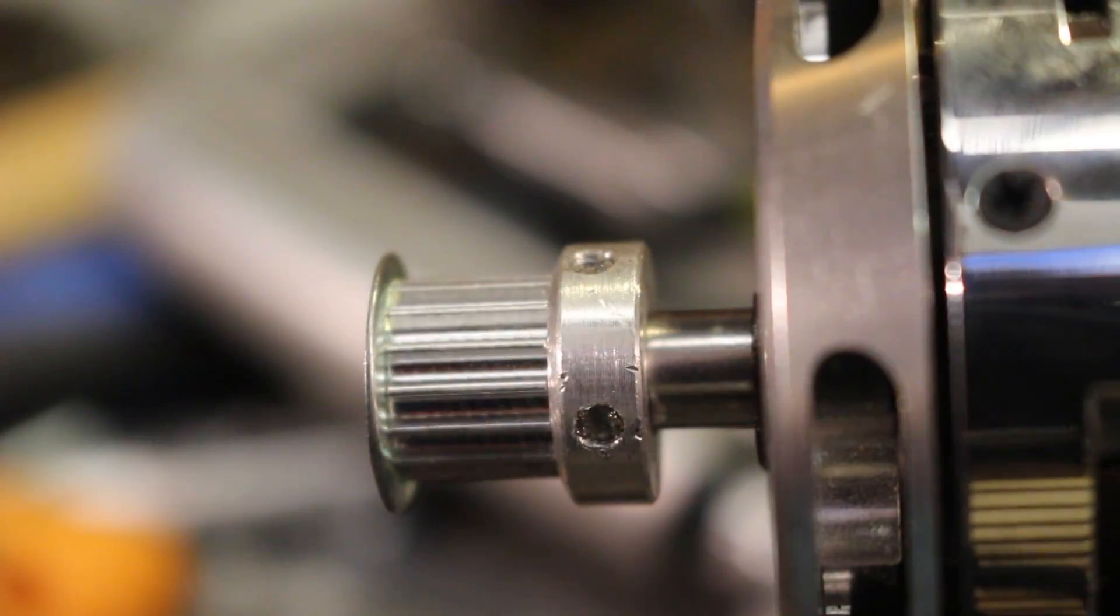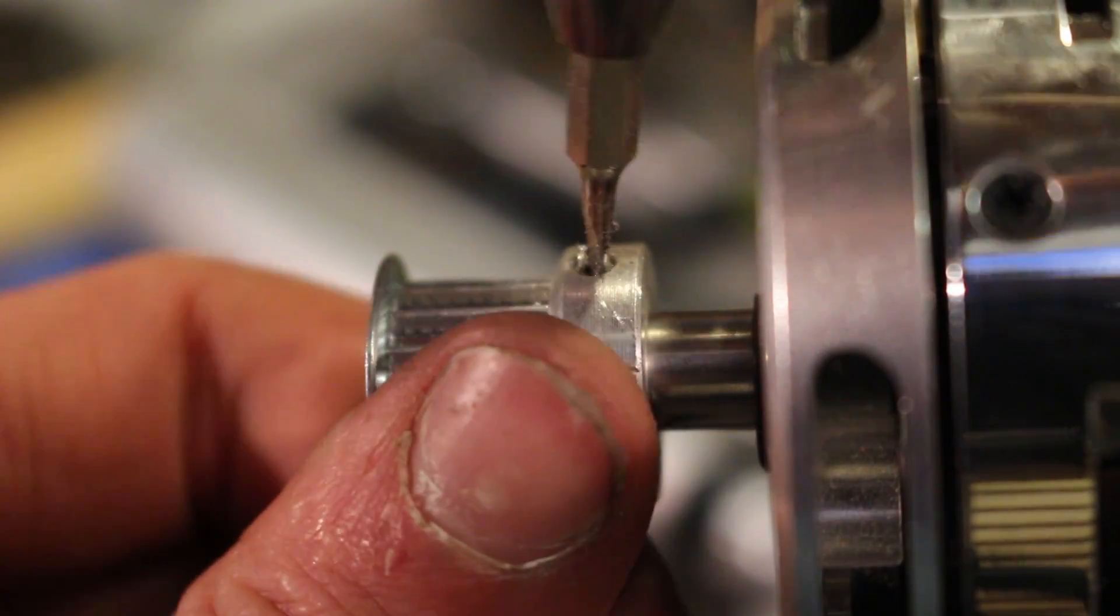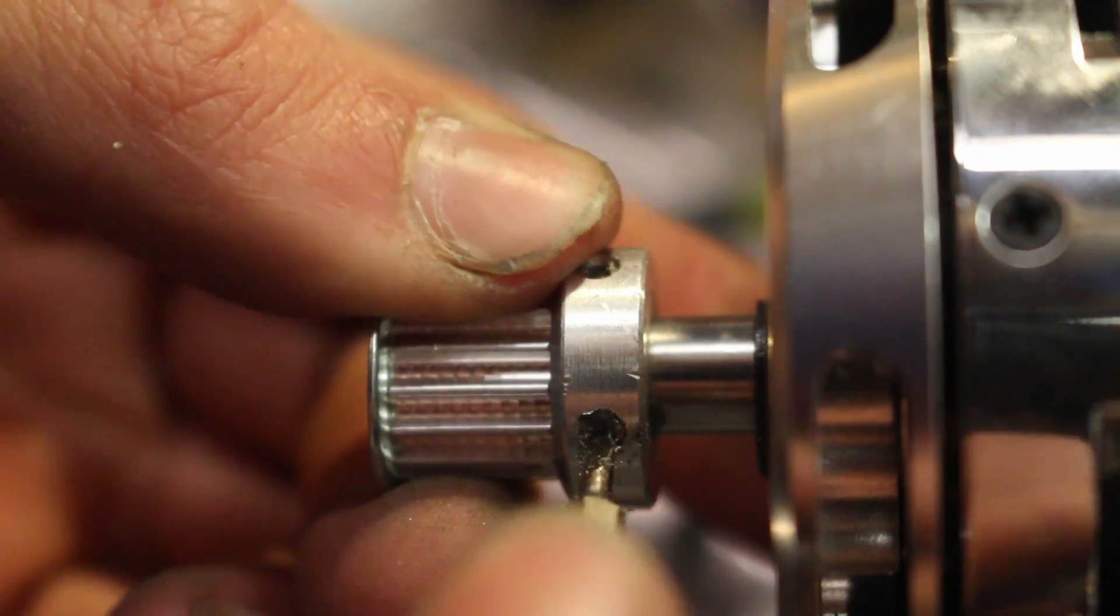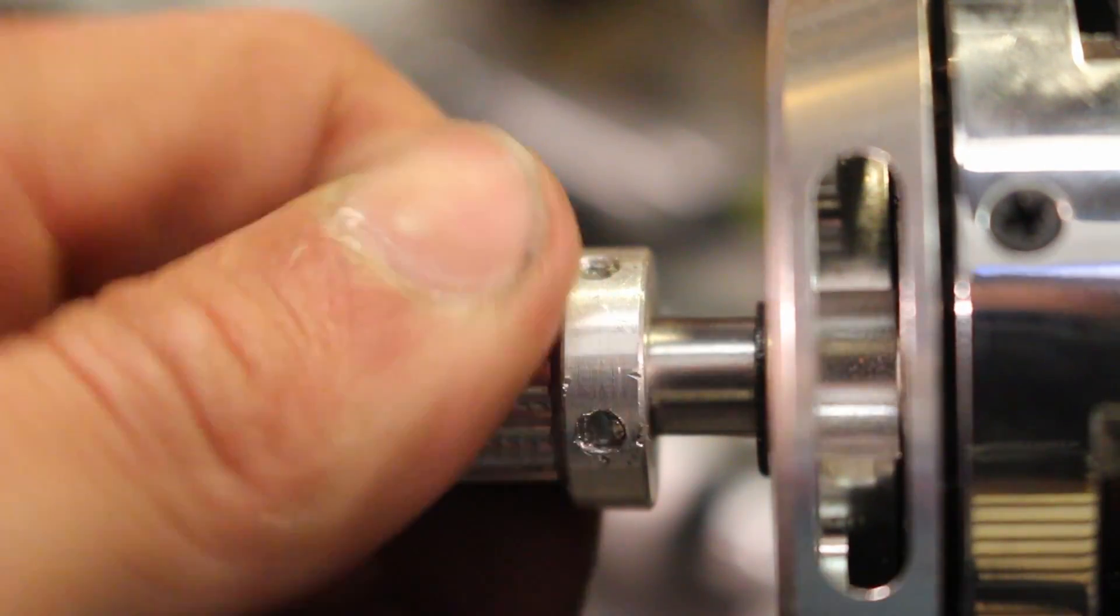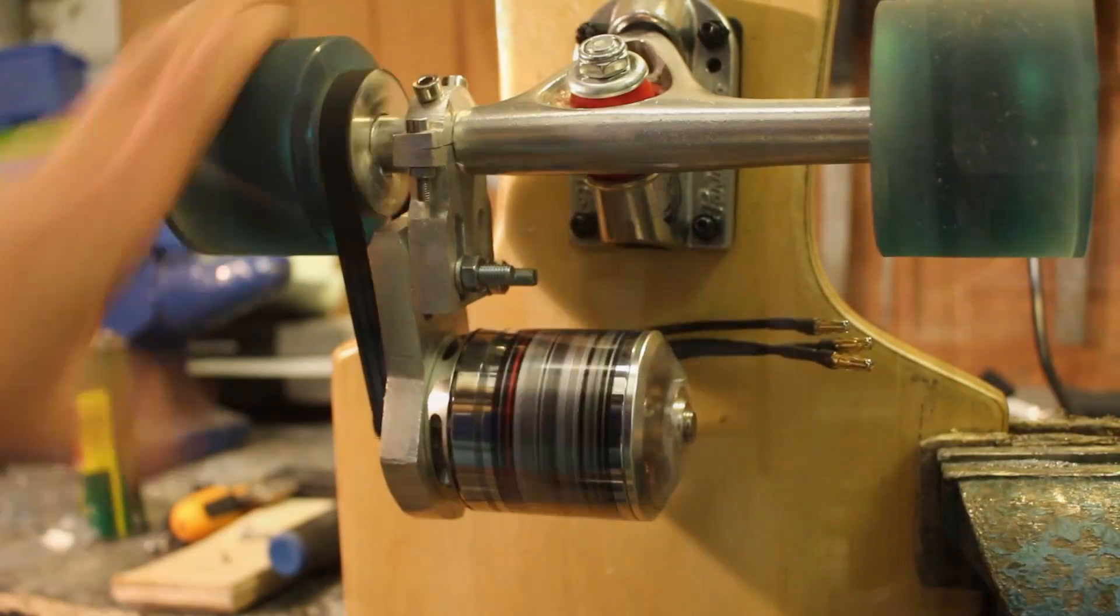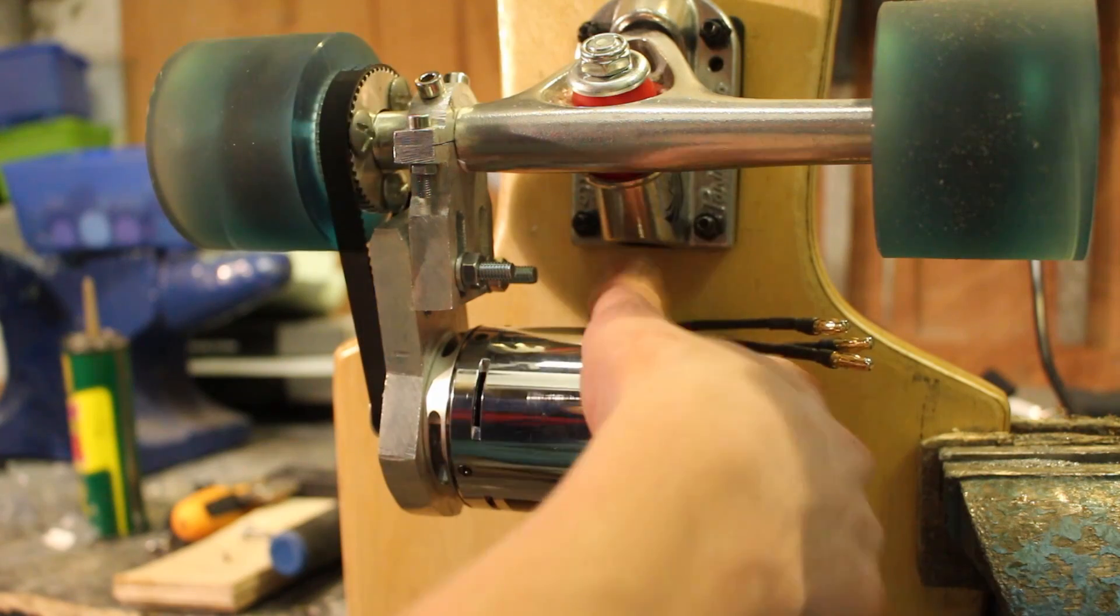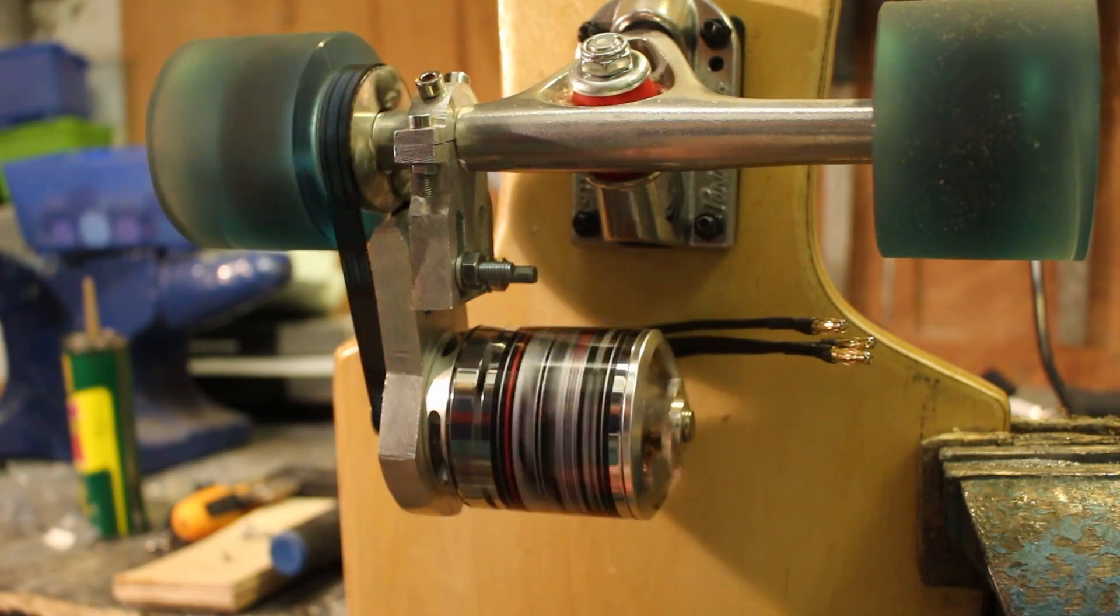In total I made three little M3 grub screws which are going to go on the pulley and I tightened them all down as tight as possible against the shaft and this should stop it from rotating at all. Once all of the screws have been tightened down and I've tightened down all of the bolts so that the belt is properly tensioned that's pretty much the mechanical build finished. The next step is to do all of the electronics and it's all pretty simple but I'll be covering that in next week's tutorial.